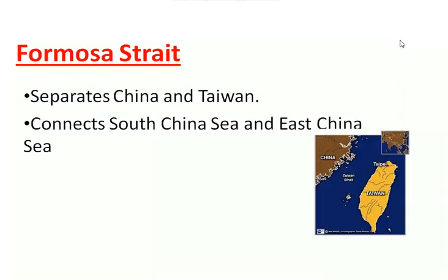Formosa Strait, also called Taiwan Strait, is located between China and Taiwan. It connects the South China Sea and the East China Sea.